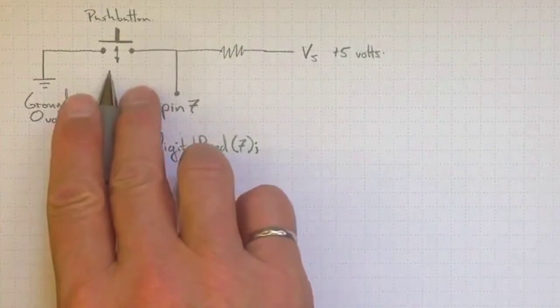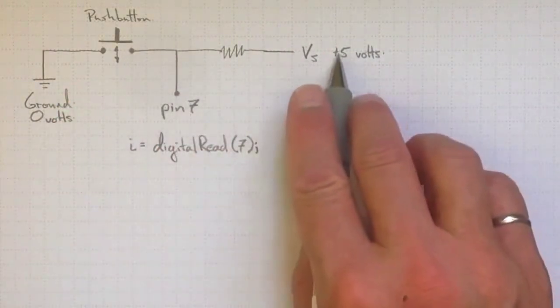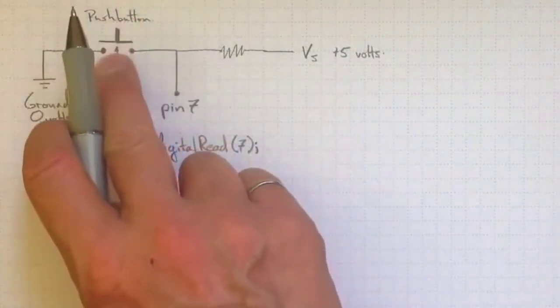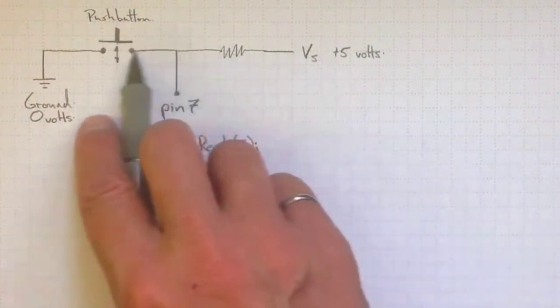So if the push button is open, pin 7 will definitely be at 5 volts, because eventually enough current will flow through to bring this up to a 5 volt potential. If I close the push button, so the current is flowing across here,